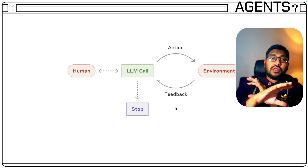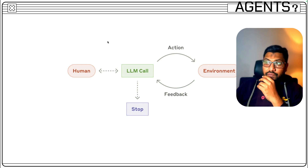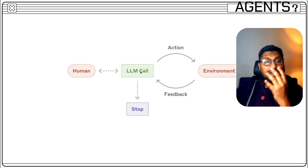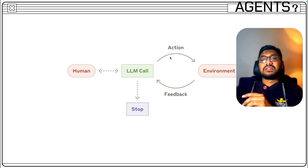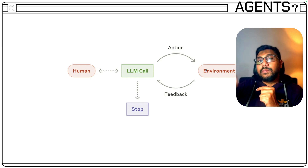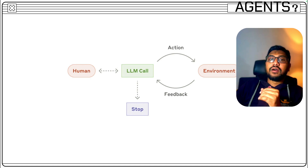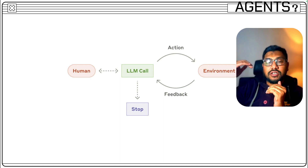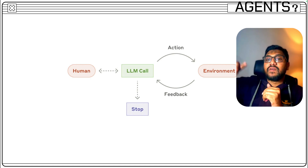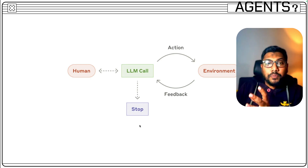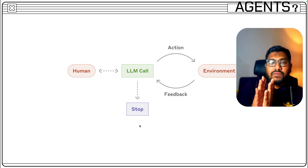Now getting into the simplest workflow of how an agent could look. A human makes a question or a call, and there should be an action happening in some kind of environment — a coding environment, the internet, or something else. There could be feedback coming from it. If there's a question about Bitcoin, there should be a set of actions or plans, with multiple agents working towards it. When they do something, feedback comes back saying whether it has been accomplished, not accomplished, or more tasks should be done. And ultimately, there should be some kind of stop condition.